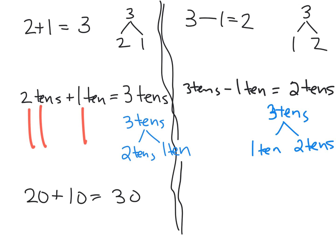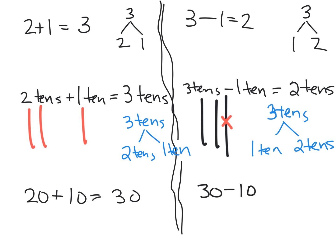If we wanted to show what that looks like with the quick 10s method, we'd start with three 10s, then cross off one of them because we're taking away one 10. All of this leads towards 30 minus 10 is equal to 20.